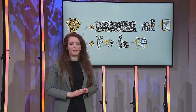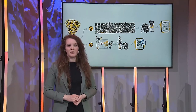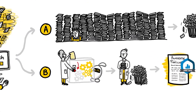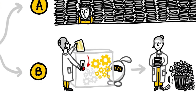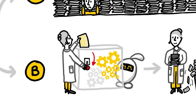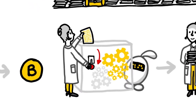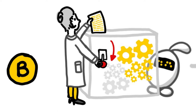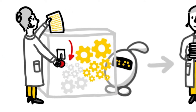With ASReview it works a bit differently, but the start is the same — you again begin with your search and thousands of papers. Then you get a little help from our friend ELAS, our Electronic Learning Assistant. ELAS helps you by reordering the papers so that the relevant papers are pushed to the front, and you don't have to screen the whole dataset — just part of it.